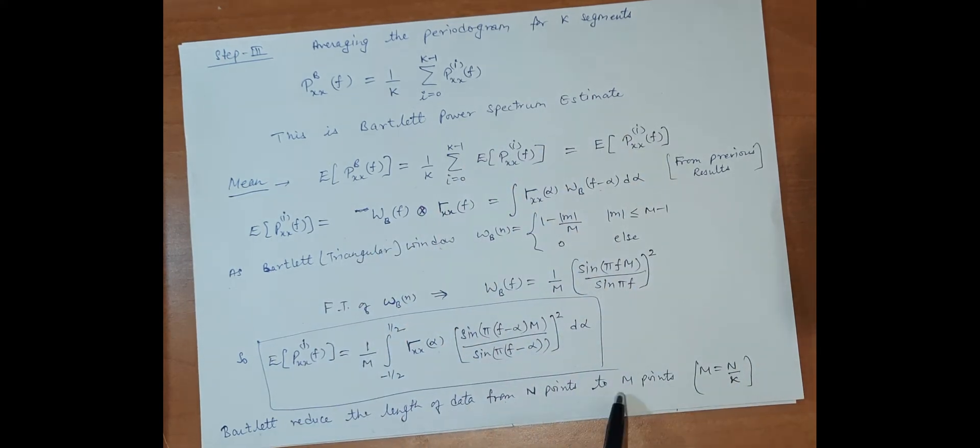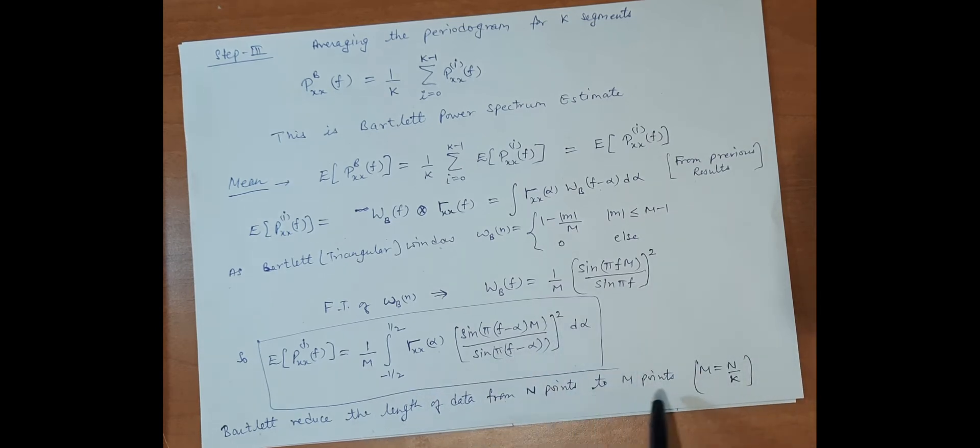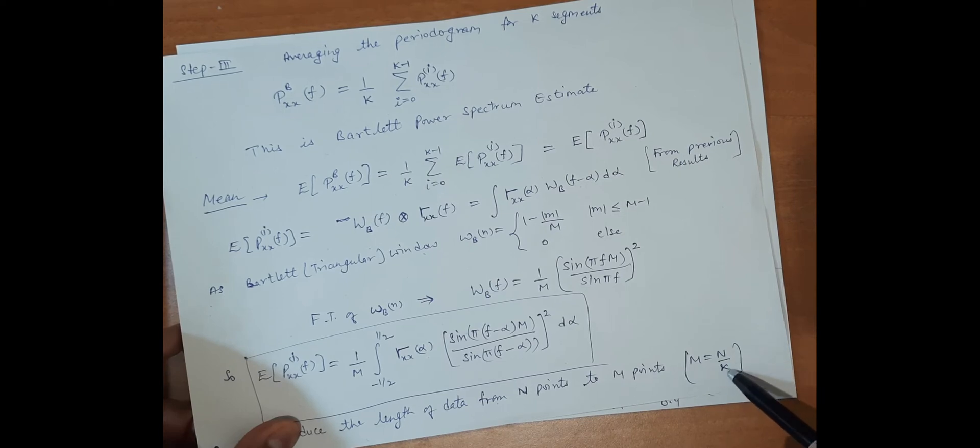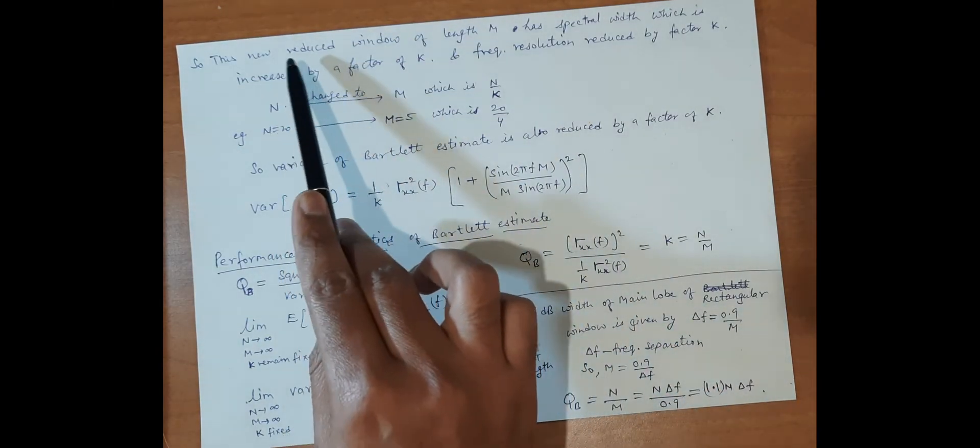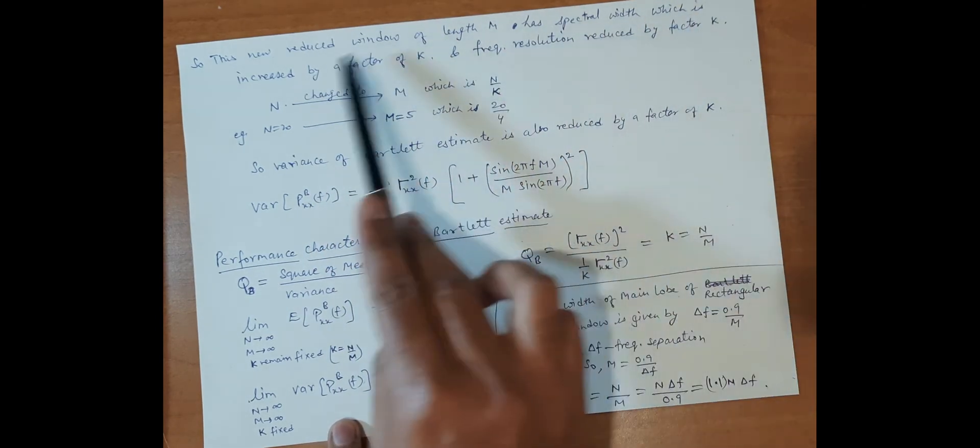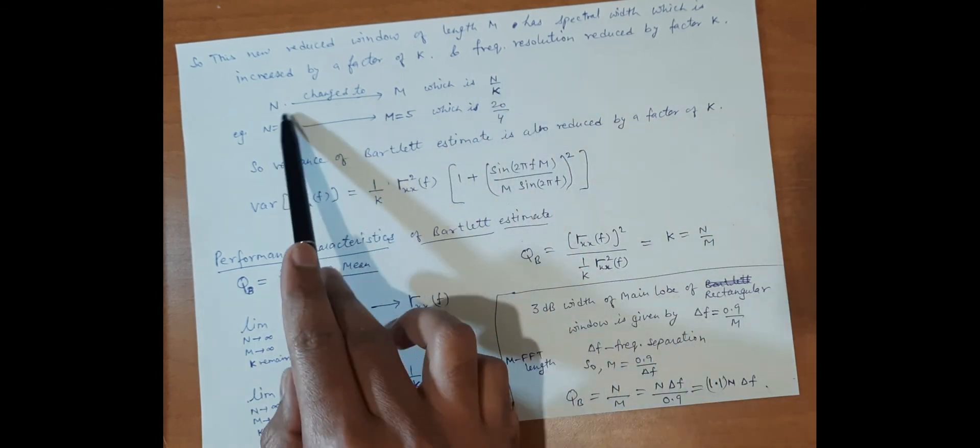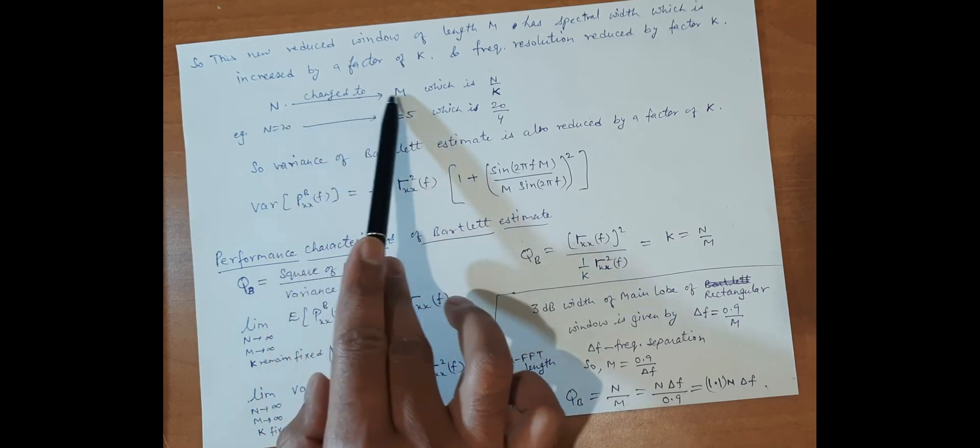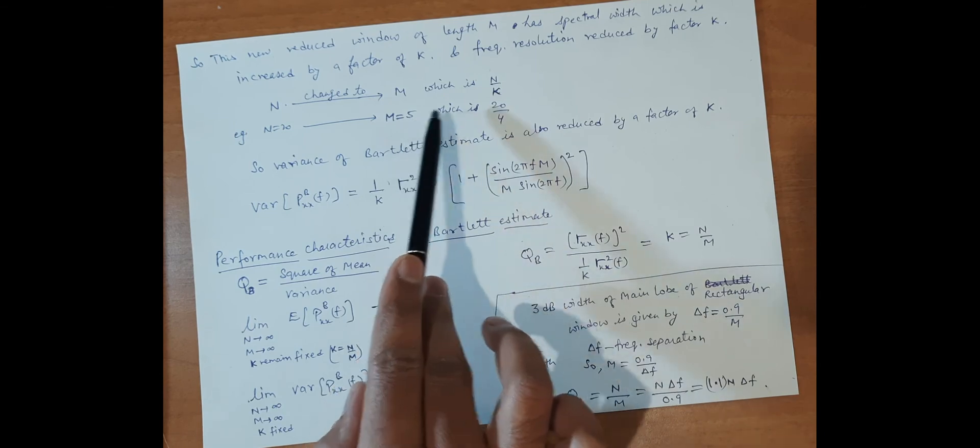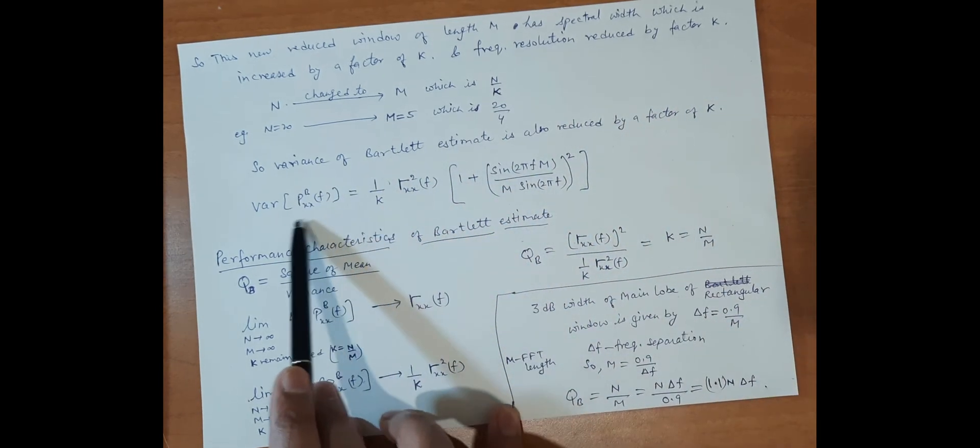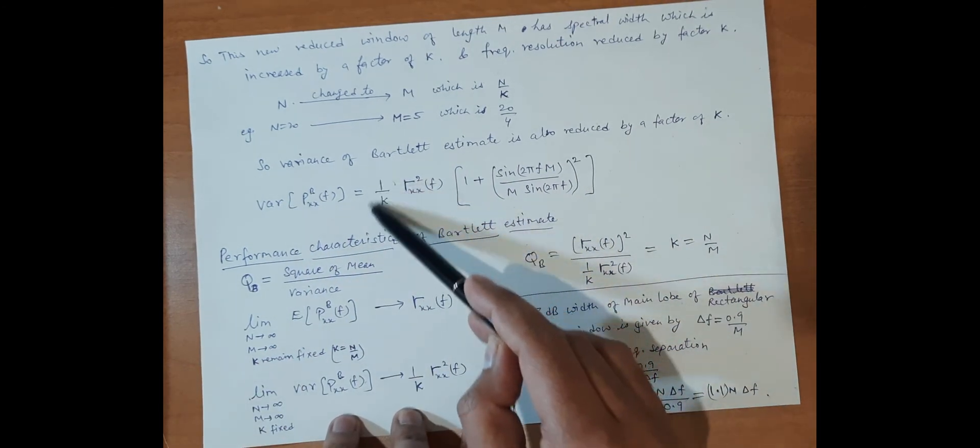Bartlett reduces the length of data from n points to m points by segmenting the data, reducing variance. It reduces n to m by a factor of k segments. For example, 20 samples are reduced to 5 (20 by 4 for 4 segments). This new reduced window of length m has increased width by a factor of k, and frequency resolution is reduced by factor k. The variance of the Bartlett estimate is also reduced by factor k.